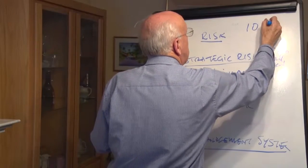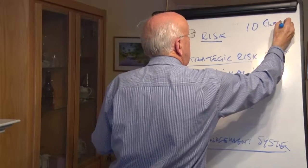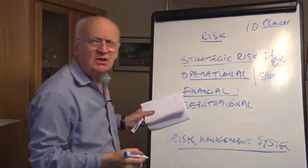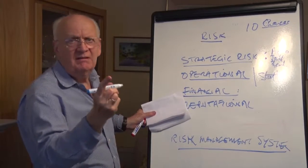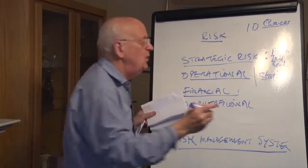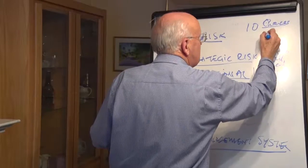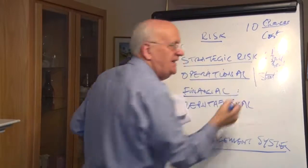The likelihood, how likely is the risk to occur, out of 10? It could be just 2, let's say. But then also, what is the cost of the risk? And that's out of 10.